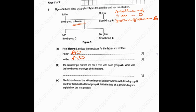Then 5b says: the daughter got married and had a child with blood group AB. What was the blood group phenotype of the husband? Since we know the daughter has B, and the child has AB, for you to have AB from B, you need someone with either AB or A blood group phenotype. So the husband to the daughter would either have genotype AB or A.